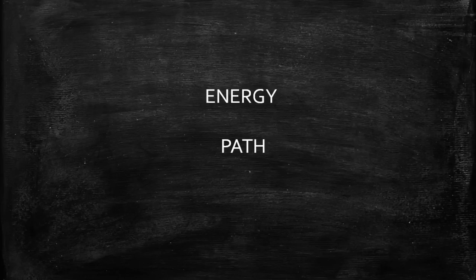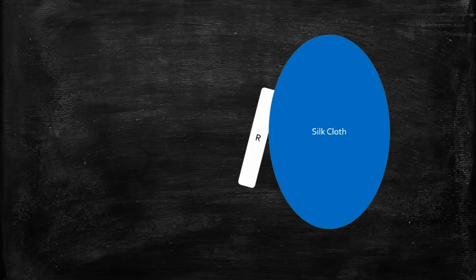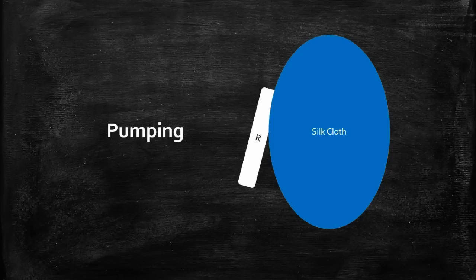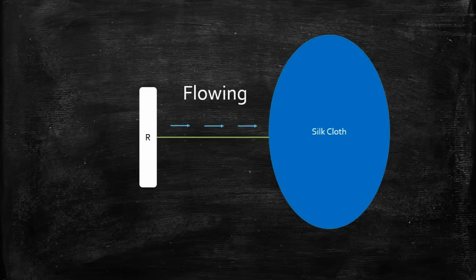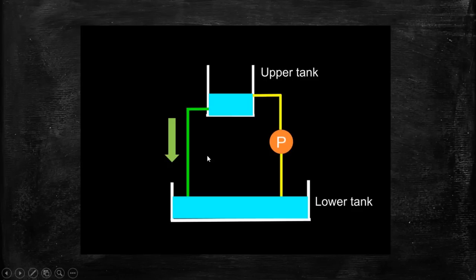The electrons are not more different than this. When we rub the silk cloth with the glass rod we were actually pumping the electrons, we were creating the energy. Now to release that energy what we need is a path. If we connect a wire in between the glass rod and the silk cloth, the electrons actually start flowing.